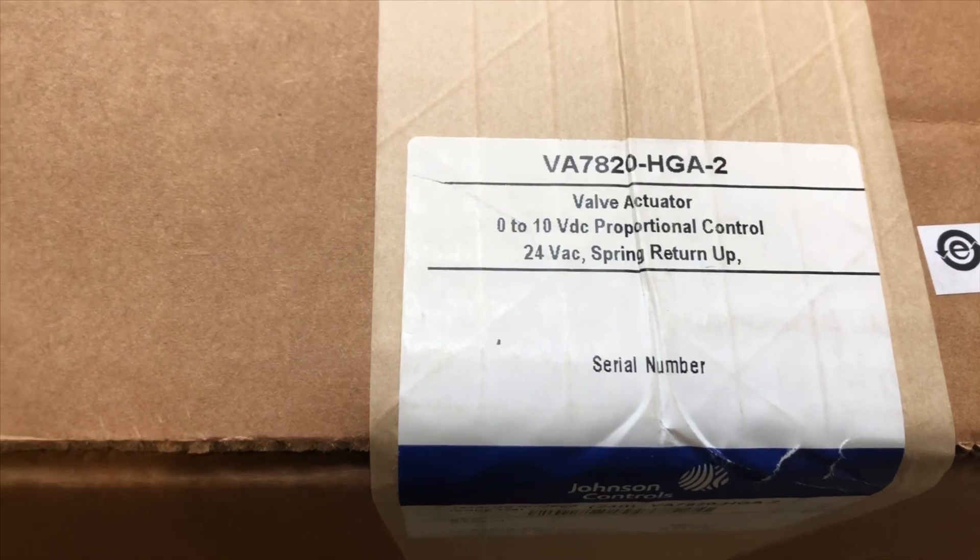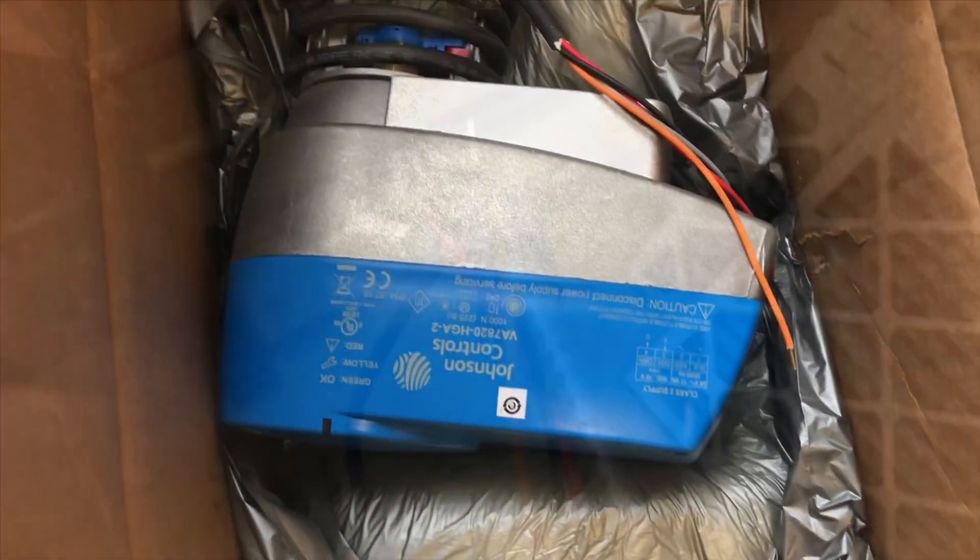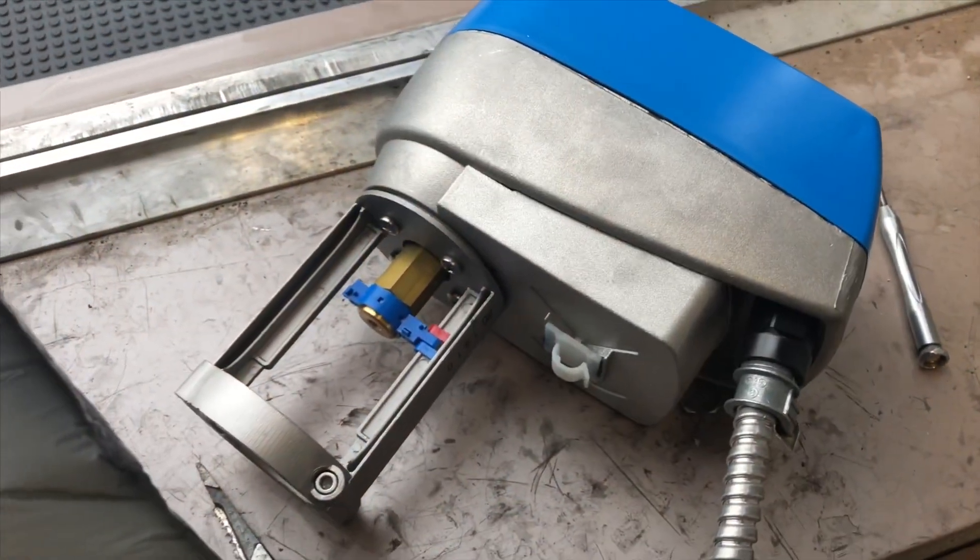Here's our replacement actuator. Here it is. Here's our ArmorFlex piece from our old actuator, put it on this new one. Connected to this piece. You can see I'm feeding the pigtail into the ArmorFlex. Now I just got to tighten up. Now we have our valve ready to install.